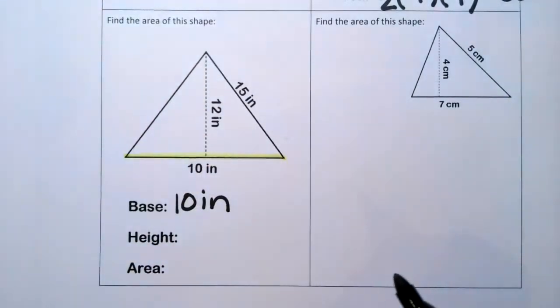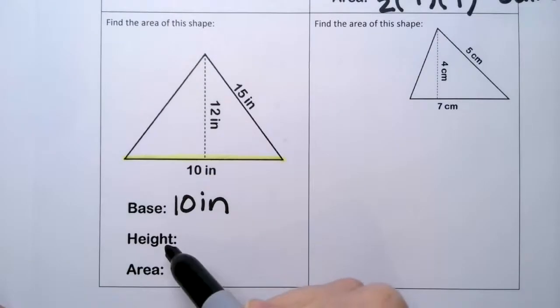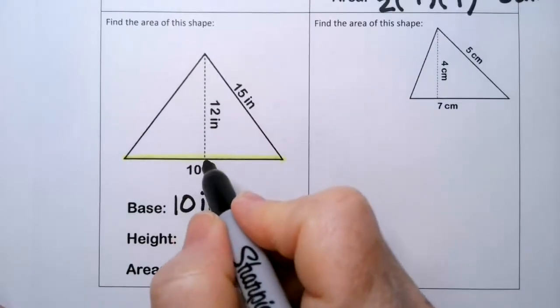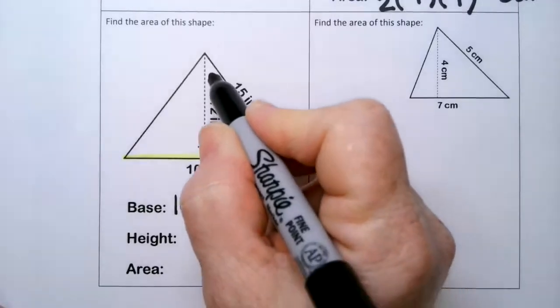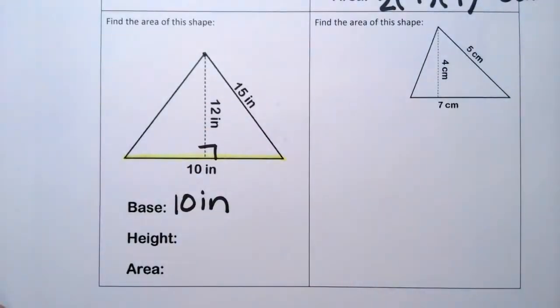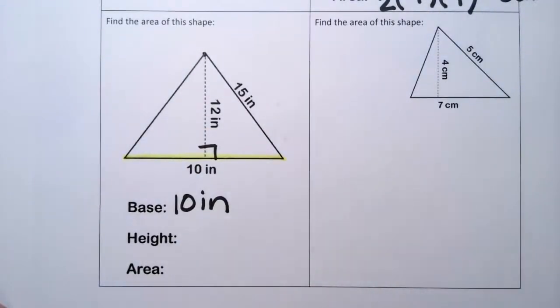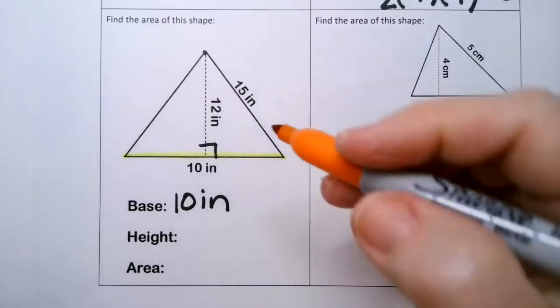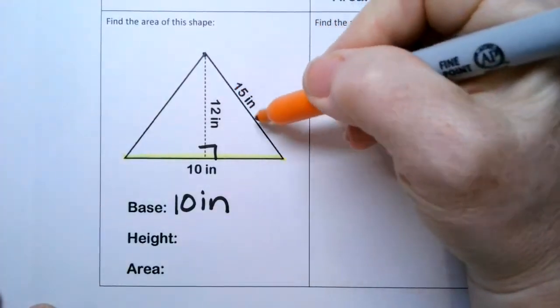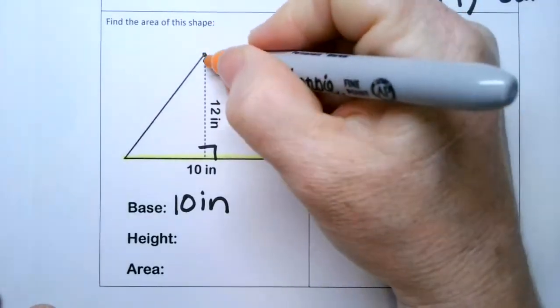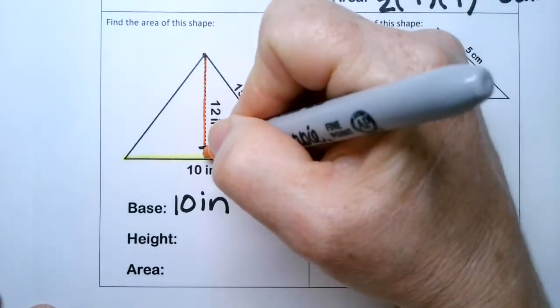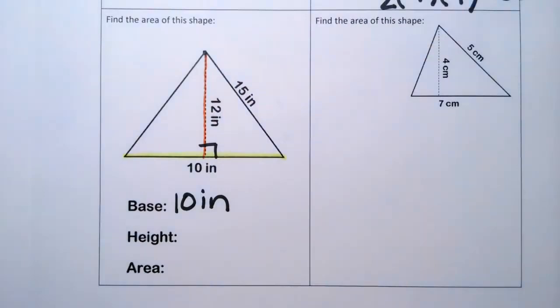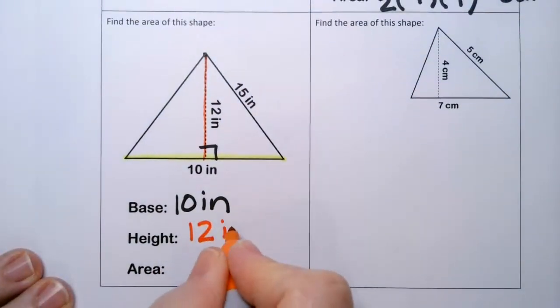Which one is the height? Remember your parallelogram. No. The height that we use for a triangle has to be a line drawn perpendicular to the base, and it has to go to the highest point on the triangle. That's the definition of a height of a triangle. So 15 inches, that's our slant height, or in this case think of it as a slant height.